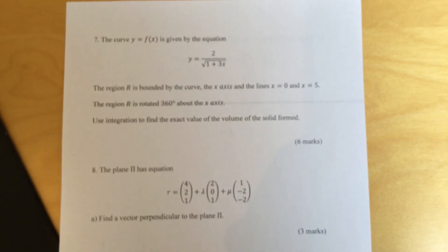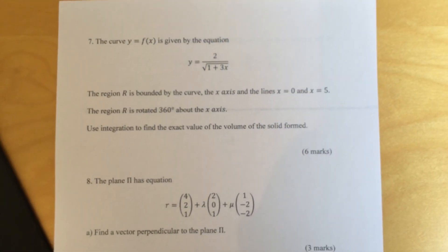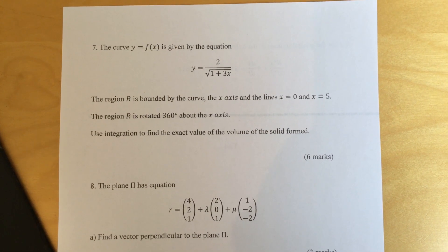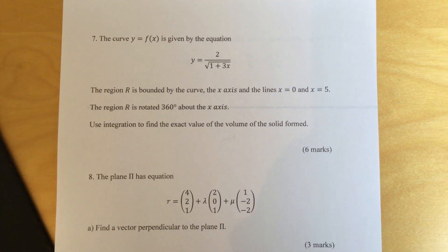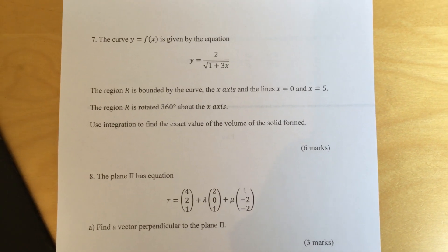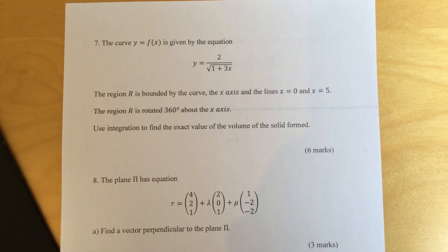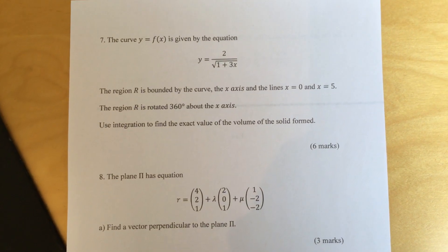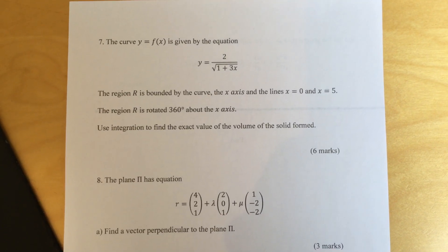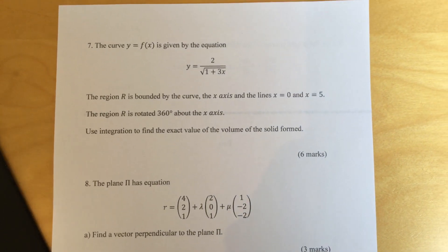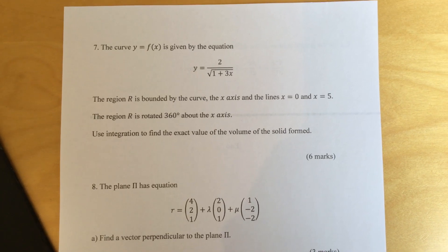Question seven. The curve y equals f of x is given by the equation y equals 2 over square root of 1 plus 3x. The region R is bounded by the curve, the x-axis, and the lines x equals 0 and x equals 5. The region R is rotated 360 degrees about the x-axis. Use integration to find the exact value of the volume of the solid formed.